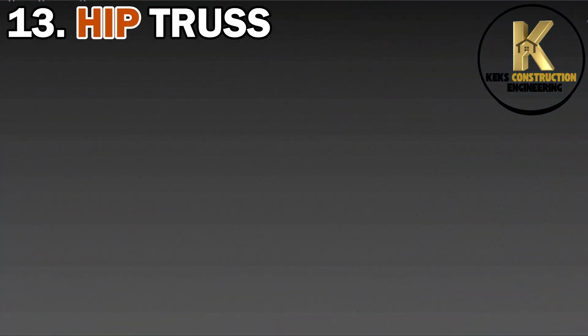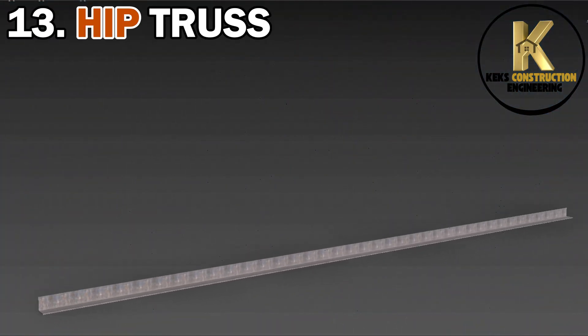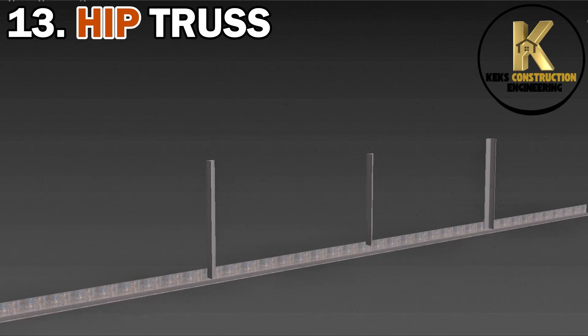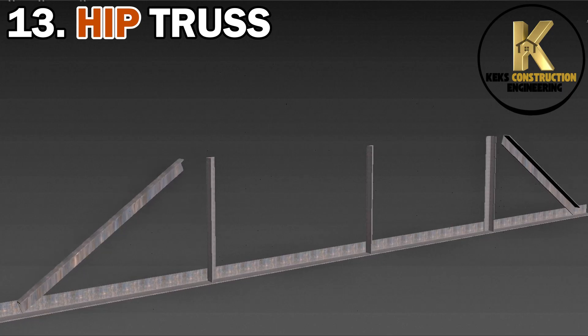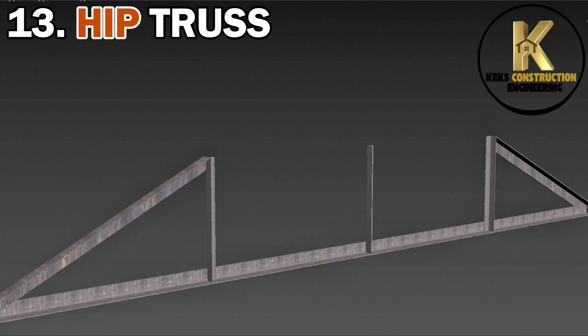13. Hip Truss. This supports hip roof designs with sloping ends, common in residential homes for aesthetic appeal and wind resistance.